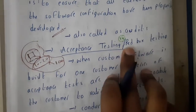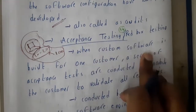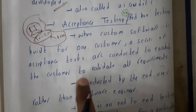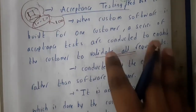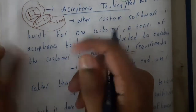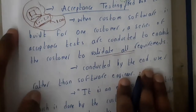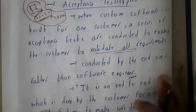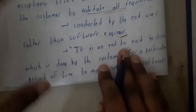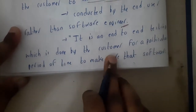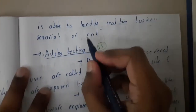That is nothing but acceptance testing. It is also called red box testing. When custom software is built for one customer, a series of acceptance tests are conducted to enable the customer to validate his requirements. He should check according to his requirements — if he requested the software to allocate a minimum of 10,000 students, he should test with that many, not just 10 or 20. This test is conducted by the users rather than the software engineer. Acceptance testing is an end-to-end testing done by the customer for a particular period of time to make sure the software is running according to the real-time business scenario.